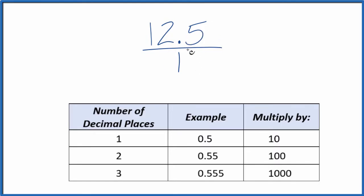Next, let's get this to a whole number. I see there's one decimal place. With one decimal place, we multiply by 10. That'll give us a whole number. So 10 times 12.5 ends up giving us 125.